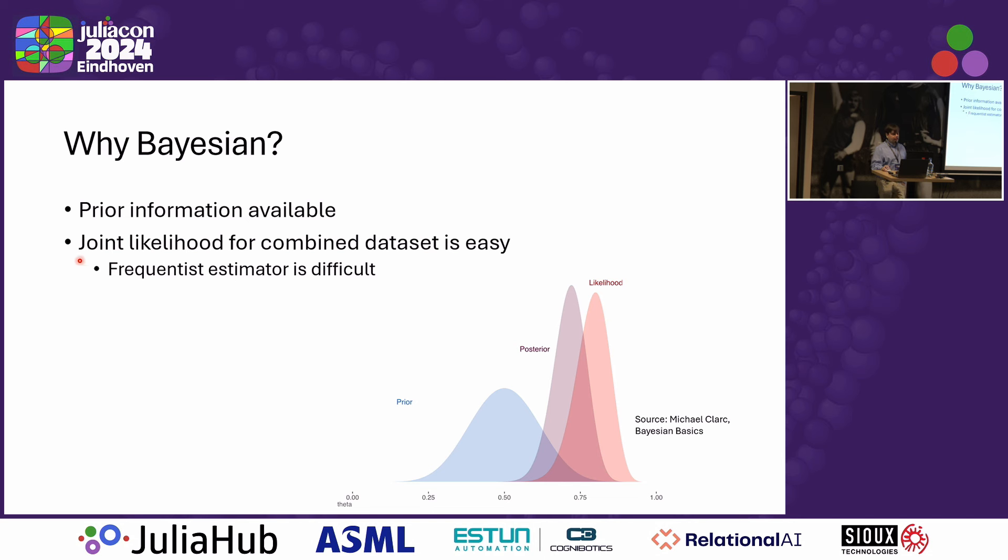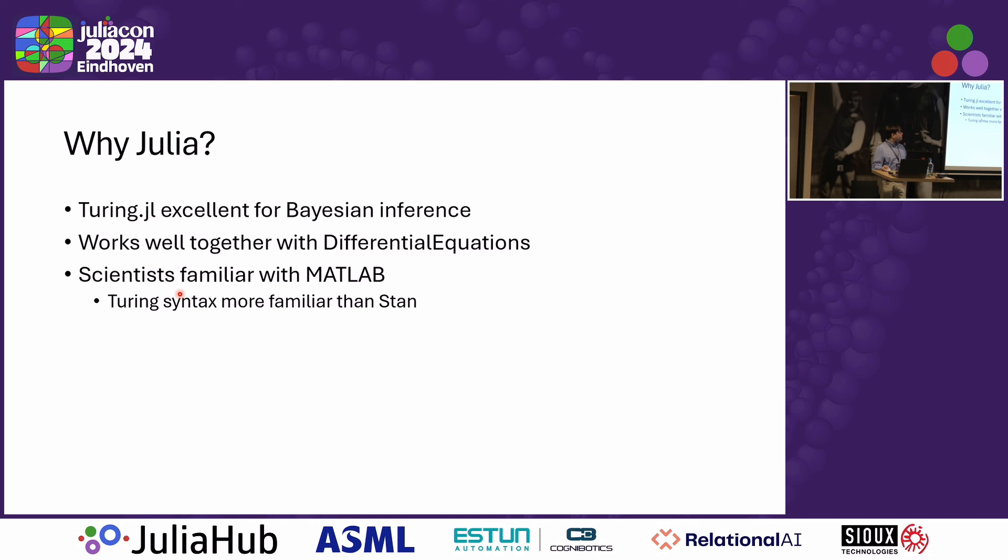The second ingredient is the likelihood. In particular here, it is not that difficult to calculate the joint likelihood of both measurement setups together. This is in contrast to if you took a more traditional statistical approach using frequentist statistics, coming up with a way to quantify uncertainty there for both of the measurement setups together would be quite difficult to achieve. But with Bayesian methods, it goes kind of automatically.